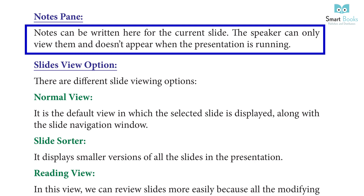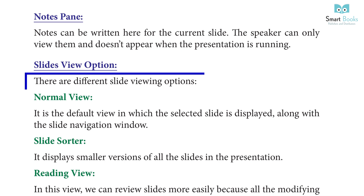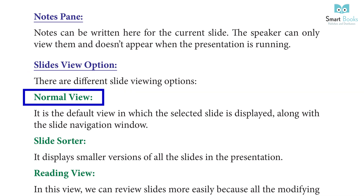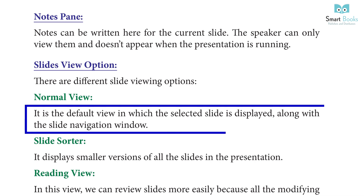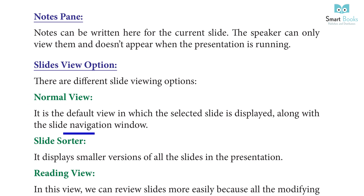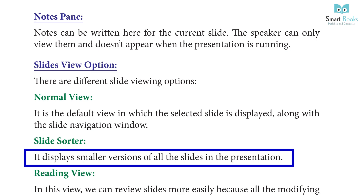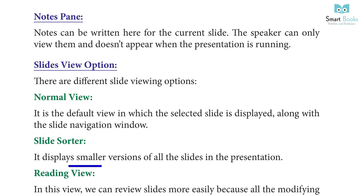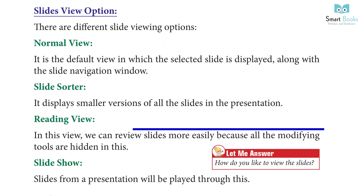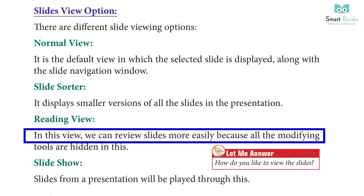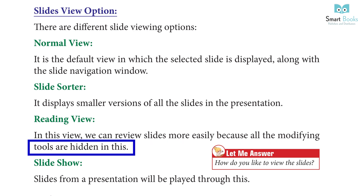Notes Pane: Notes can be written here for the current slide; the speaker can view them but they do not appear when the presentation is running. Slide View Options include: Normal View — the default view where the selected slide is displayed along the slide navigation window. Slide Sorter — displays smaller versions of all slides in the presentation.